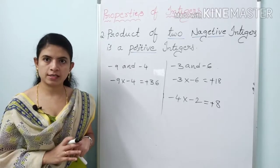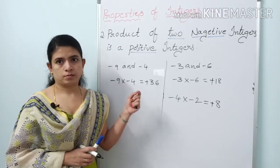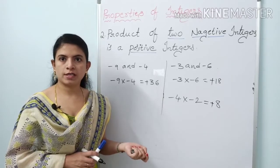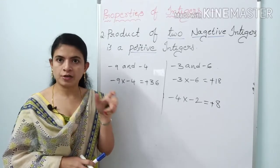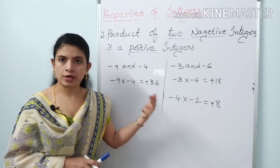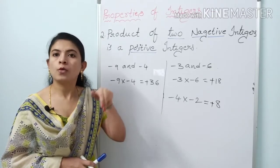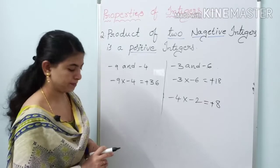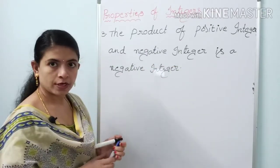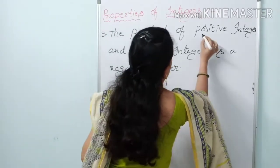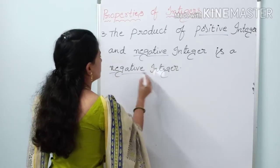So if we take any two negative integers, their product is positive. To summarize: the first property — product of two positive integers is positive. The second — product of two negative integers is also positive. Third property: the product of a positive integer and a negative integer is a negative integer.